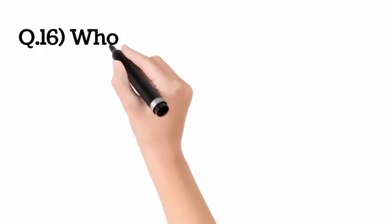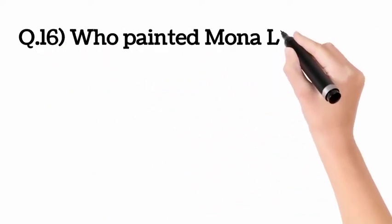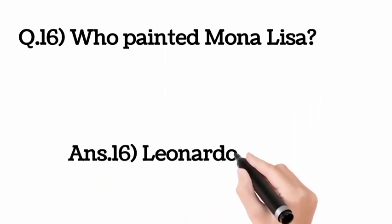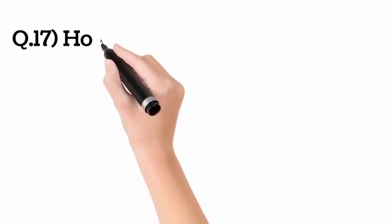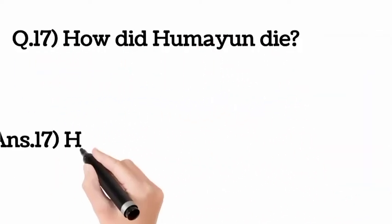Question number 16: Who painted Mona Lisa? Answer: Leonardo da Vinci. Question number 17: How did Humayun die? Answer: